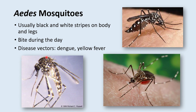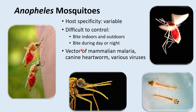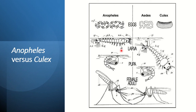Anopheles mosquitoes have varying host specificity and can be very difficult to control — they go indoors and outdoors to bite and will bite during the day or night. They are the vector of malaria and canine heartworm, among other viruses. Malaria kills more than half a million people every year, and those who die are typically children under five and pregnant women — a huge problem that the science community needs to work on, compounded by insecticide resistance.